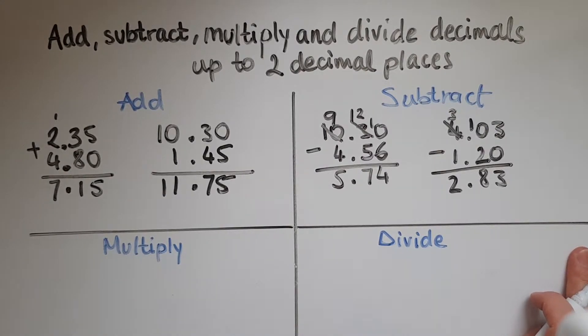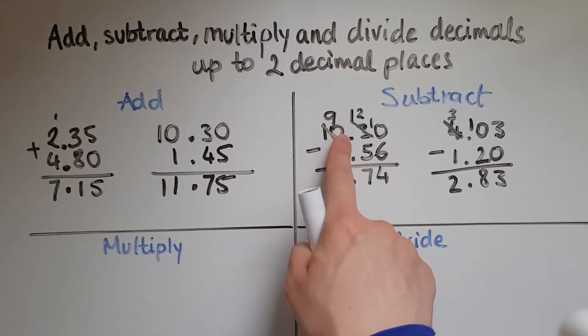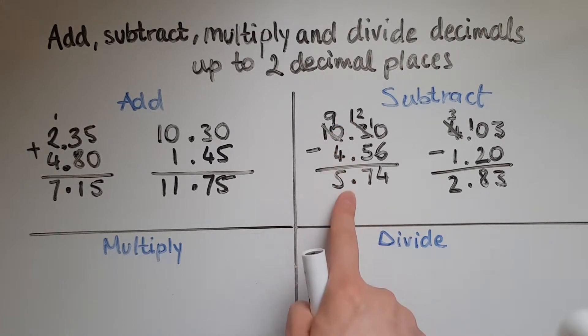So what is important is lining up the numbers so that we have the digits of the same value under each other. So the easiest way to do it is look at the decimal points. If they lined up you're absolutely right. And then start working with them in the same way that you do with whole numbers.